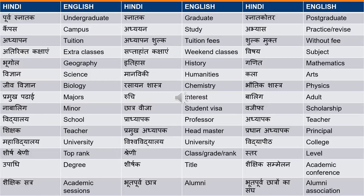The first word is 'poorv snatak' — this means undergraduate. 'Snatak' means graduate. 'Poorv snatak' means undergraduate. The next word is 'snatak' — graduate. 'Snatakottar' means postgraduate. In a dialogue where someone says they want to know about courses available for their son who wants to do a postgraduate course, you will use the word 'snatakottar'. You can also use 'post graduate' as is in the translation, but using 'snatakottar' will make a better impact on the examiner and give you some brownie points.